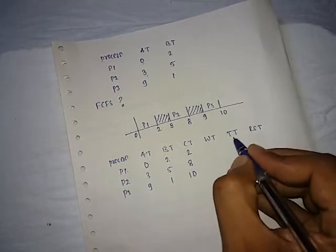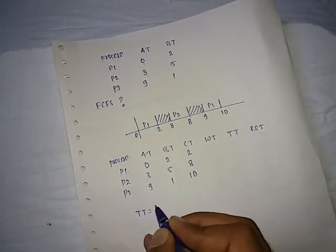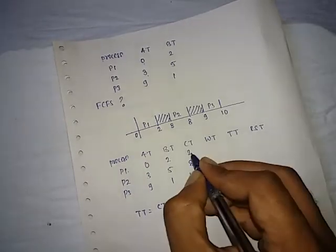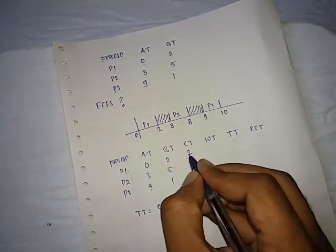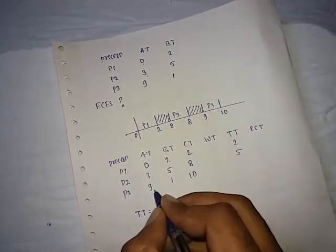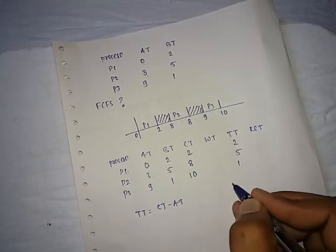Next one is turnaround time. Turnaround time is calculated by the formula: completion time minus arrival time. So, 2 minus 0, that is 2. 8 minus 3, that becomes 5. 10 minus 9, that becomes 1.